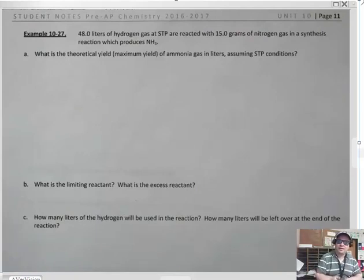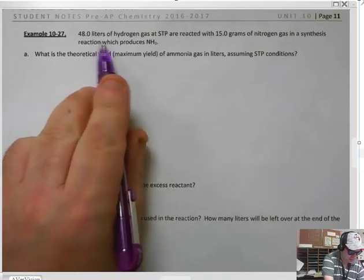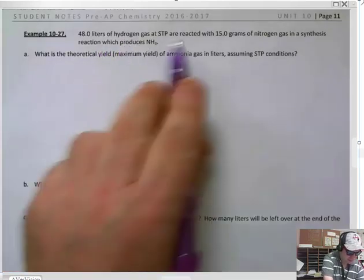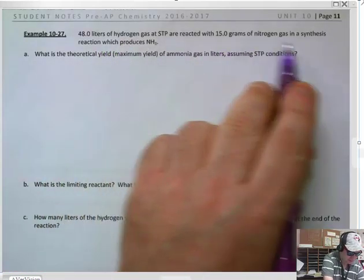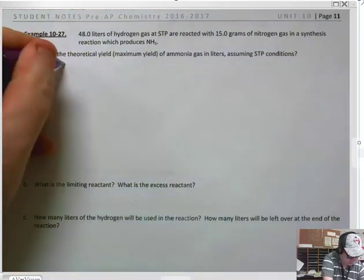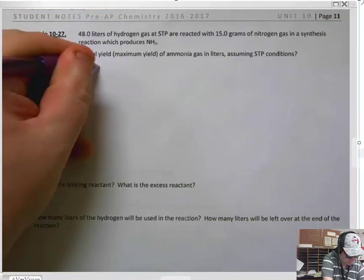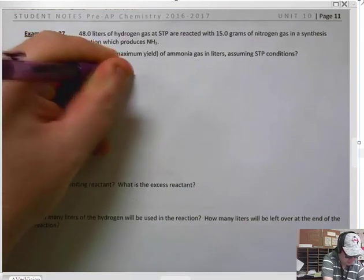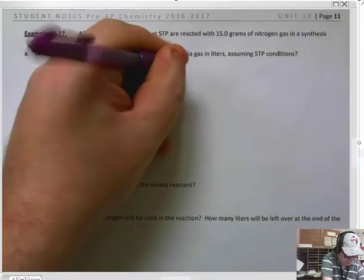We're going to do one with the nitrogen plus hydrogen mixed ammonia, which is the Haber-Bosch process here. So 48 liters of hydrogen gas are reacted with 15 grams of nitrogen gas, and this is the reaction that produces NH3. So we know hydrogen gas is H2, we know nitrogen gas is N2, and this produces NH3.